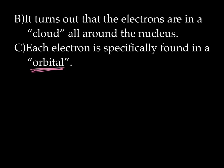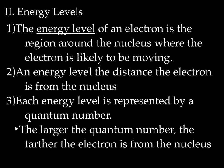We're going to spend the rest of this lecture talking about the organization of the electron cloud. It is actually quite organized. On to energy levels. Energy and electrons are two concepts that really go well together. The energy level of an electron is the region around the nucleus where the electron is likely to be moving. Energy level is the distance the electron is from the nucleus. Each energy level is represented by what we call a quantum number — just a discrete whole number. The larger the quantum number, the farther the electron is from the nucleus.